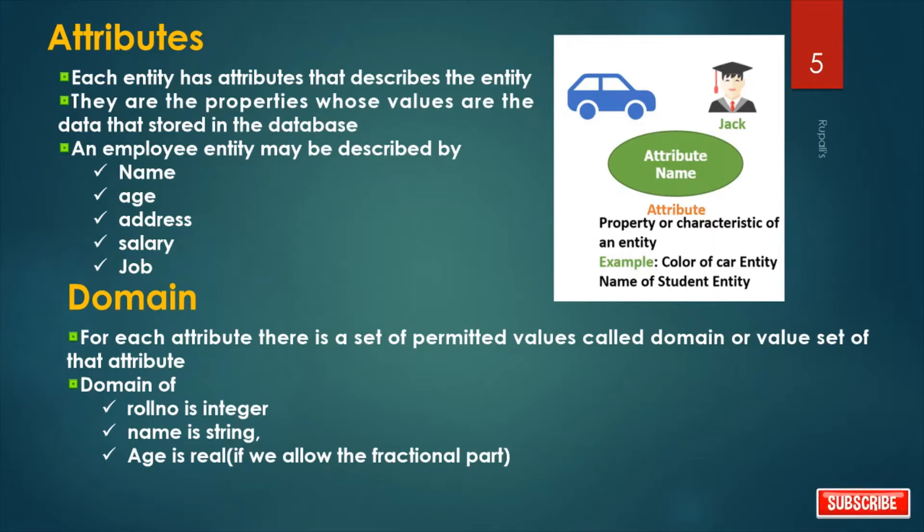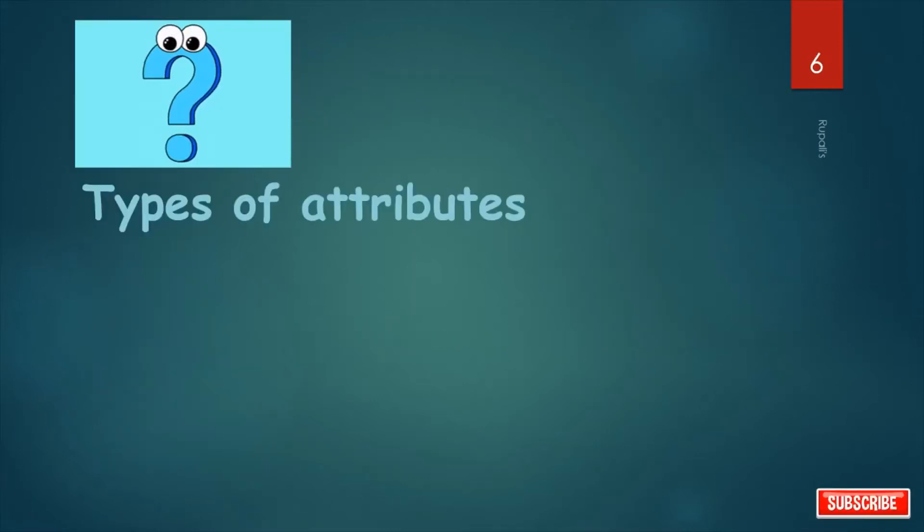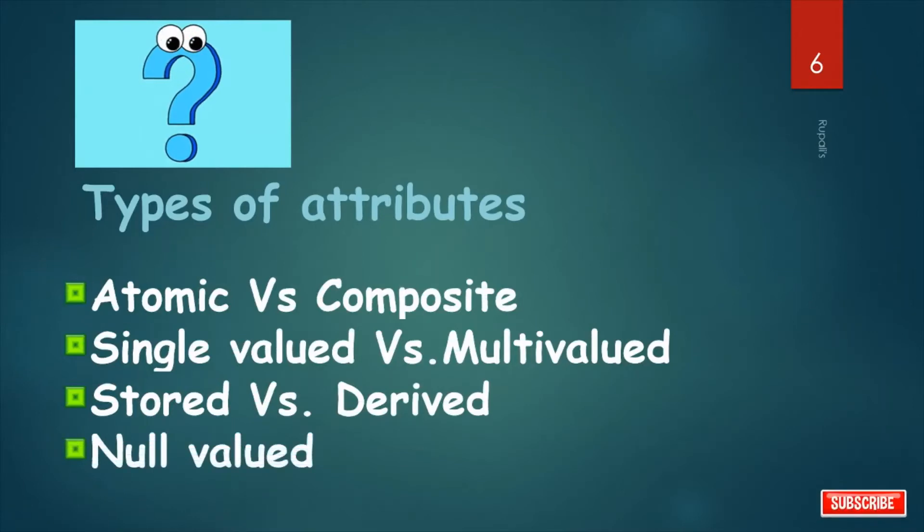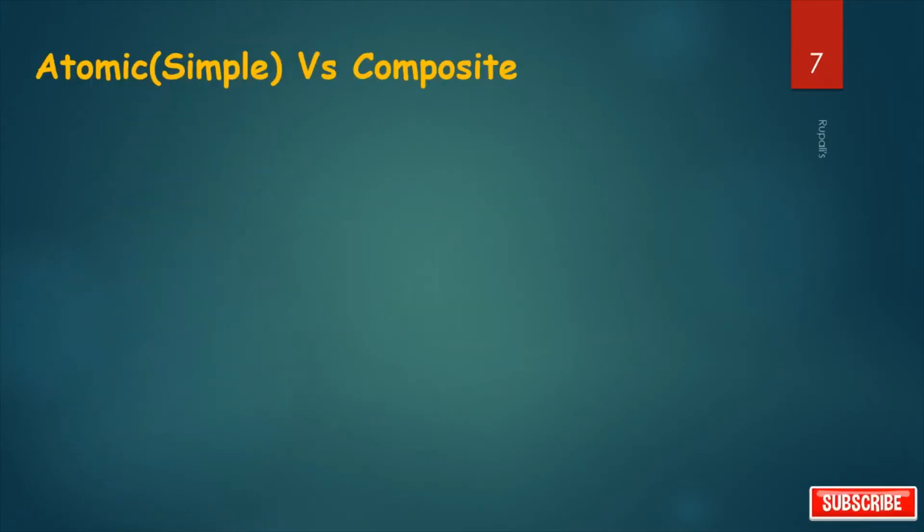So types of attributes: atomic versus composite, single-valued versus multi-valued, stored versus derived, and null-valued.